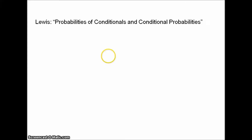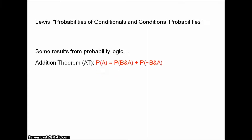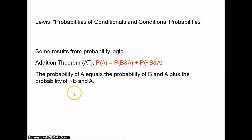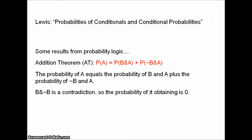The first is the addition theorem: the probability of A equals the probability of B-and-A plus the probability of not-B-and-A. This is fairly self-evident and can be proved from the axioms of standard probability logic — I won't give a proof here, just take my word for it. Consider it intuitively: B and not-B is a contradiction, so the probability of it obtaining should be zero, meaning the B and not-B in 'B-and-A' and 'not-B-and-A' cancel out.